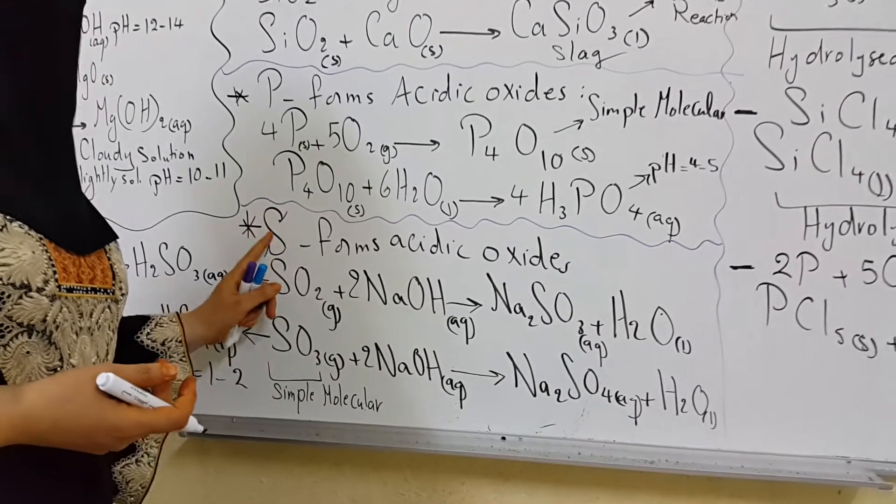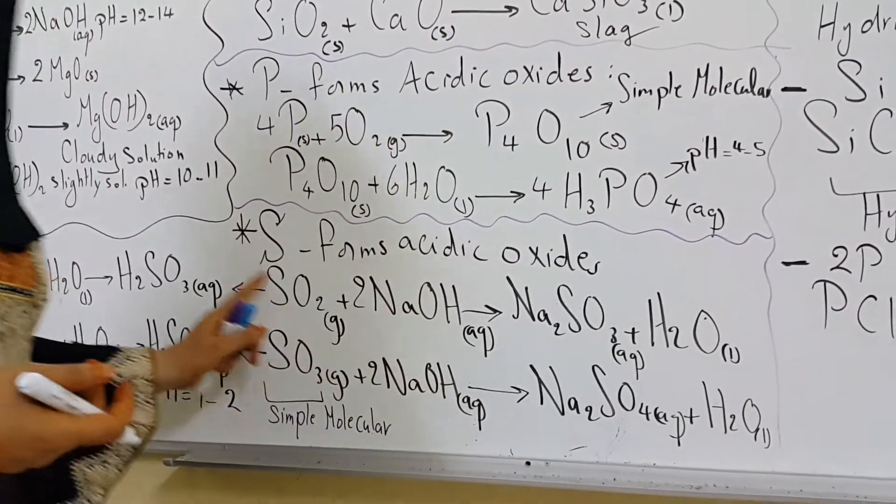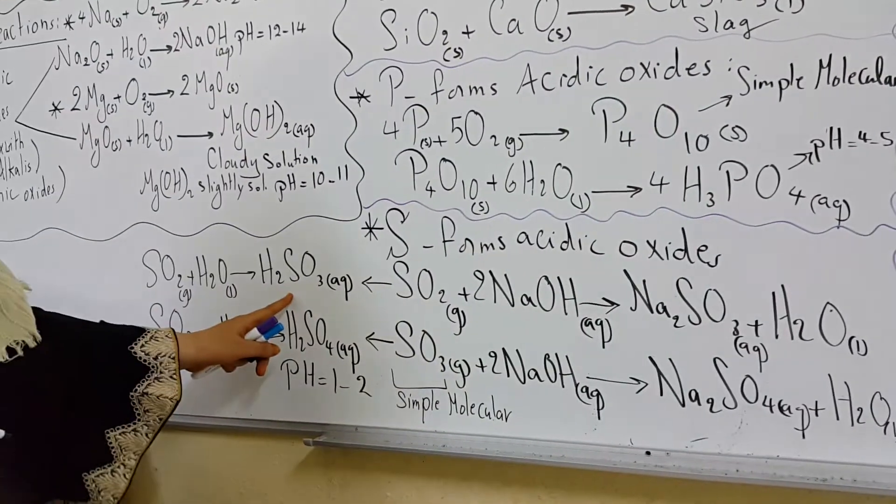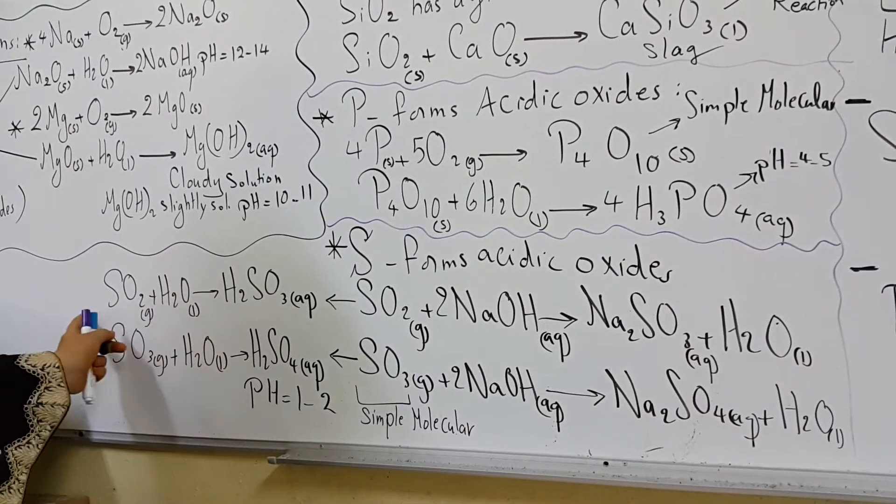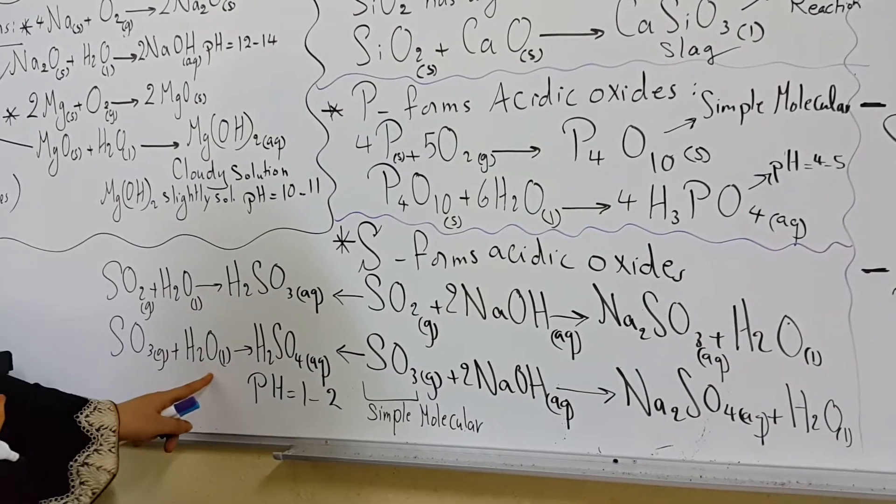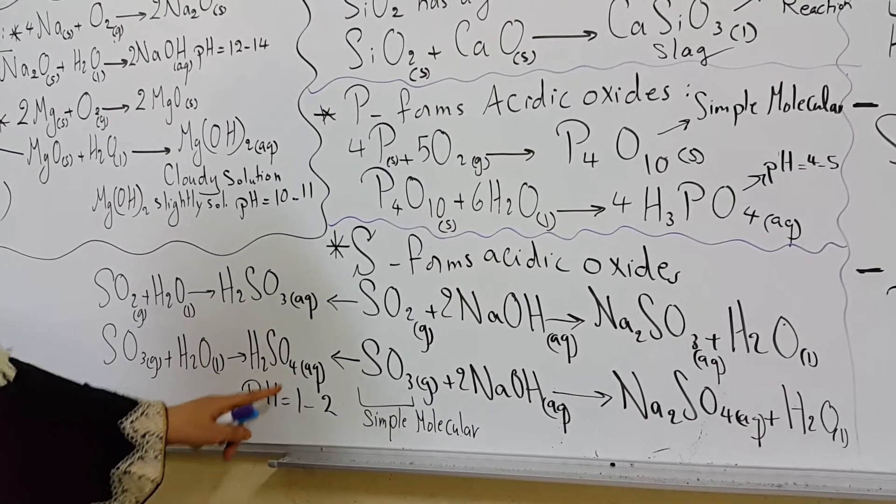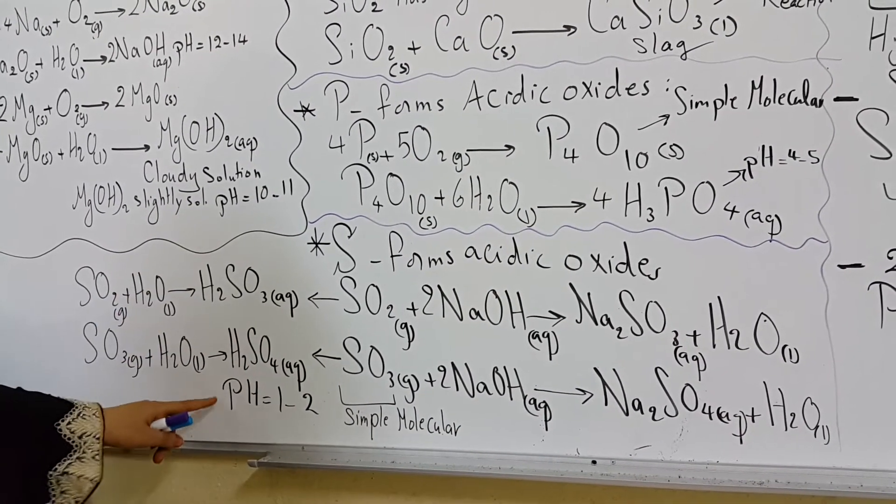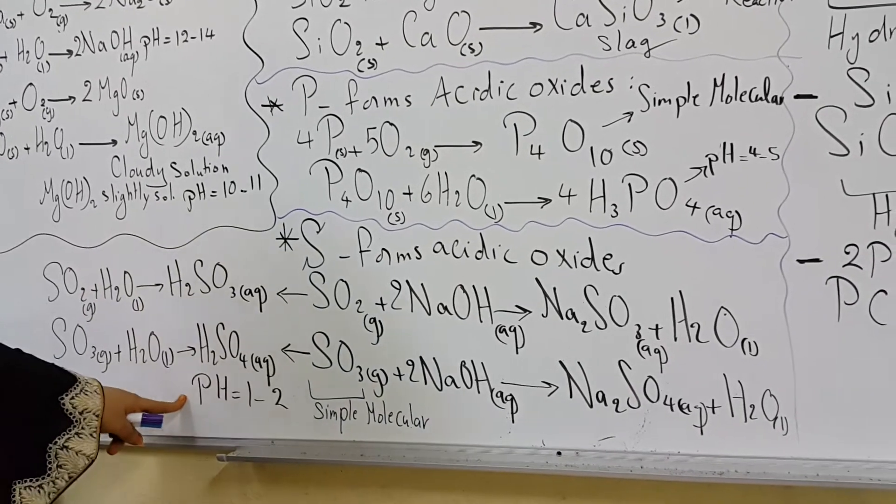Now sulfur forms acidic oxides, which dissolve in water to form a strongly acidic solution. Sulfur dioxide dissolves in water to give sulfurous acid. Sulfur trioxide dissolves in water to give sulfuric acid. pH value of these oxides in water is 1 to 2, strongly acidic.